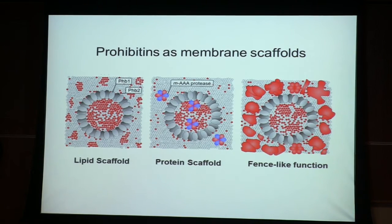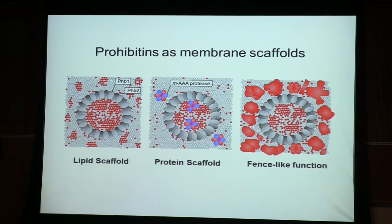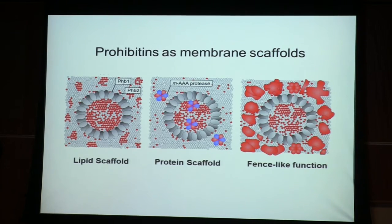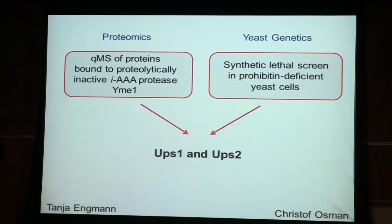Another outcome of the genetic screen is that we had a set of genes linked to the accumulation of PE and cardiolipin. We looked in the literature to see what these genes do and I was really surprised to see how little is understood — many open reading frames whose functions we didn't know. So we decided to look at these genes in more detail because they apparently affect the accumulation of PE and cardiolipin in mitochondria.